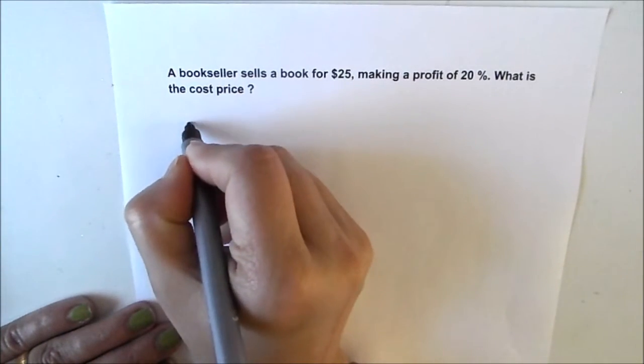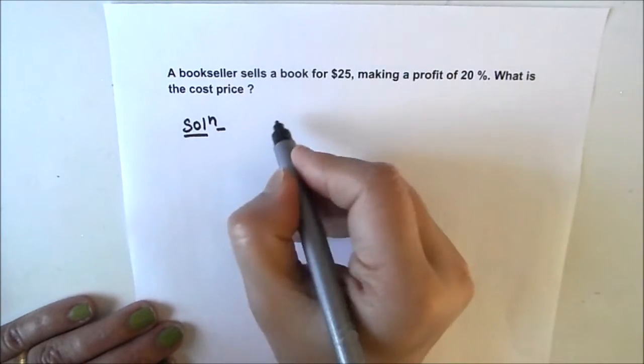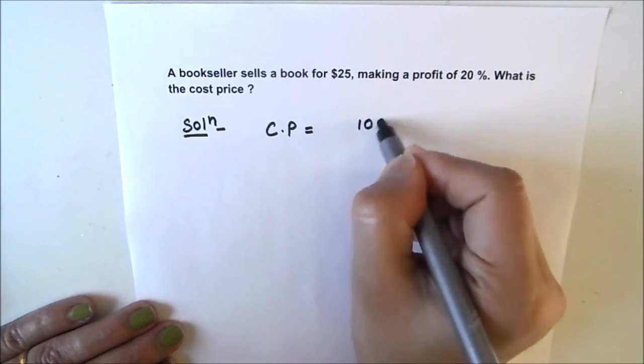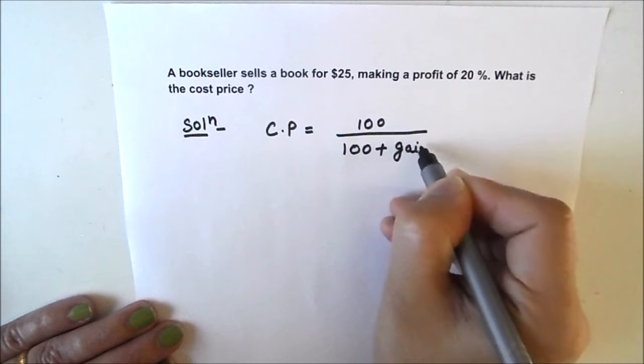We are going to use the formula for finding the cost price using gain percent or profit percent. The formula is: Cost Price equals 100 upon (100 plus gain percent) times Selling Price.